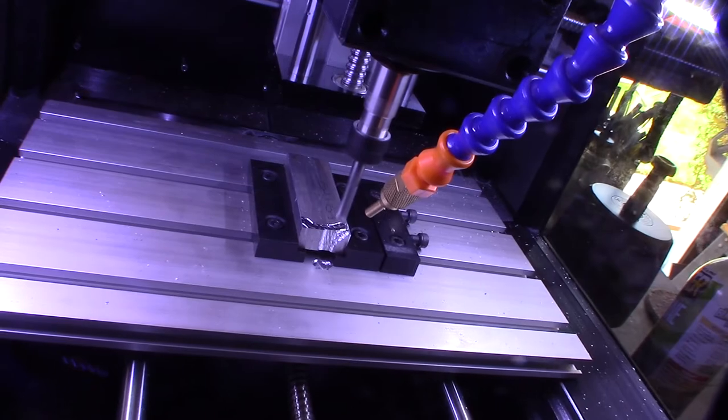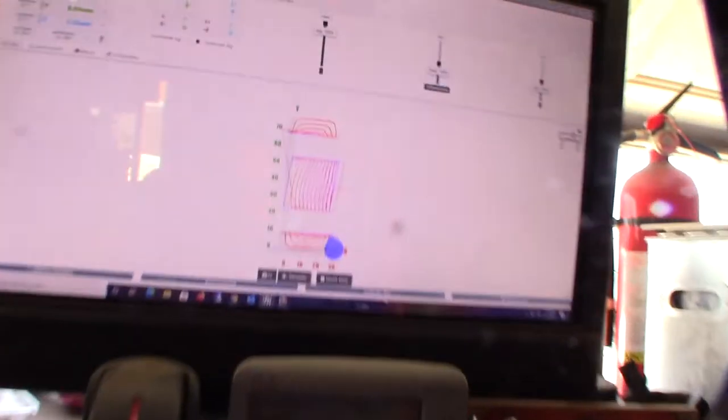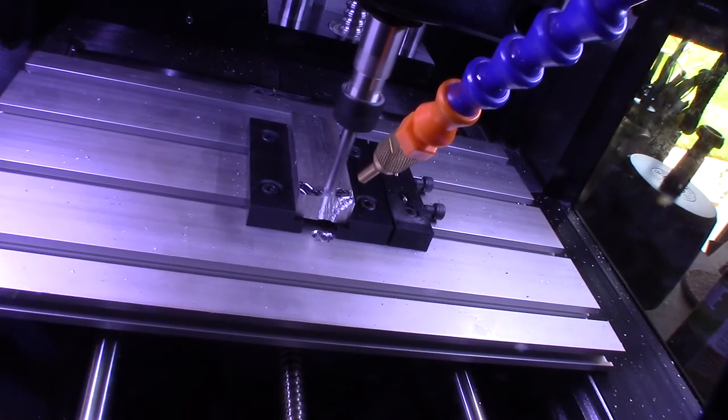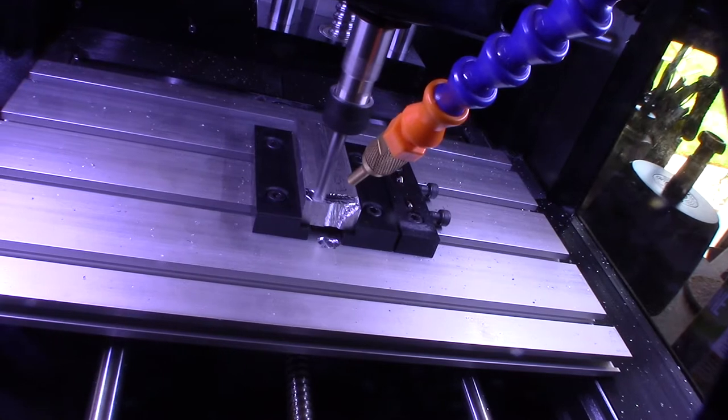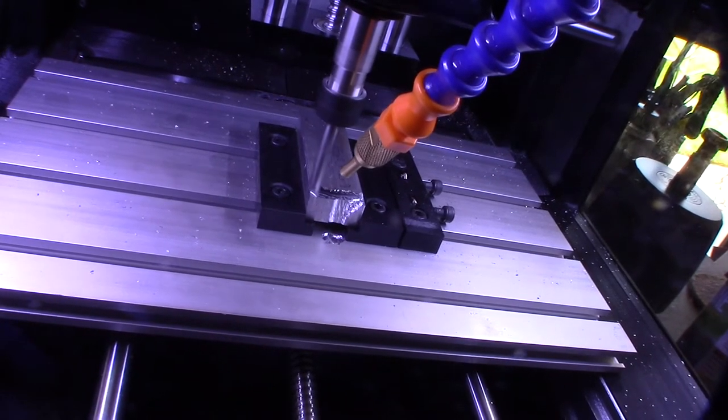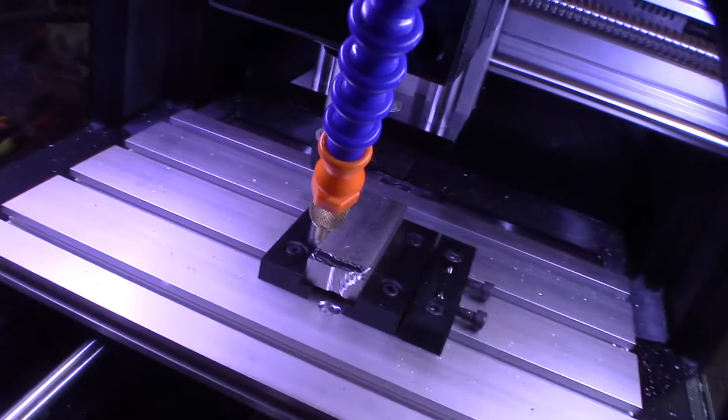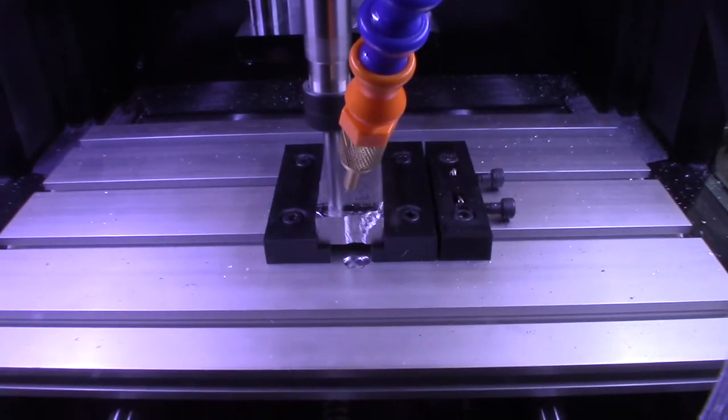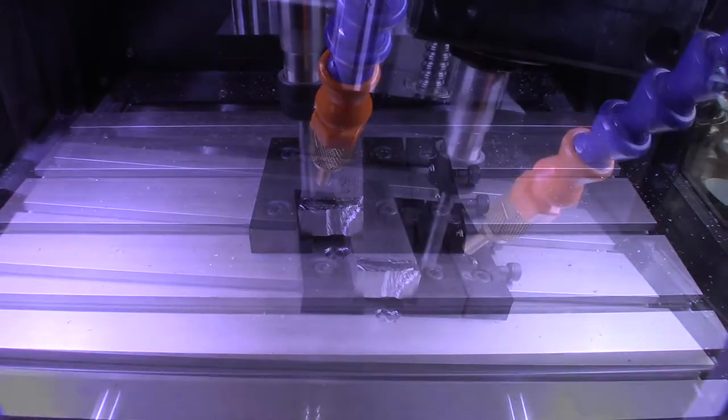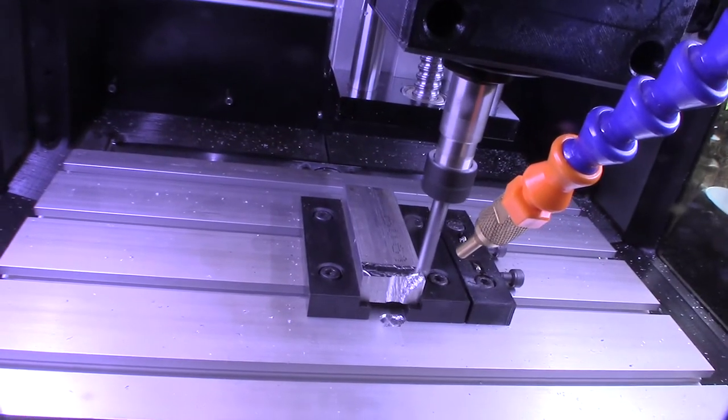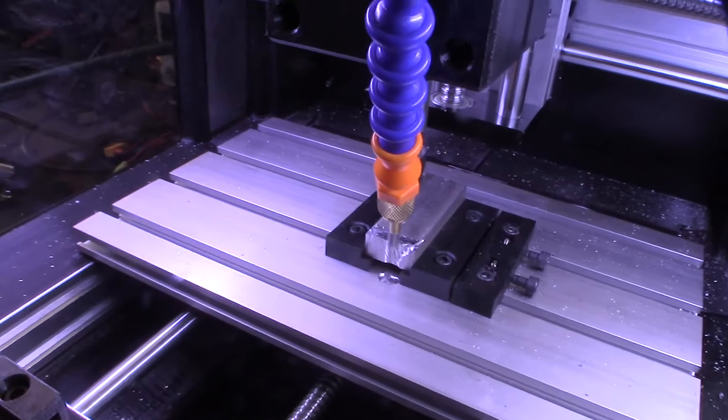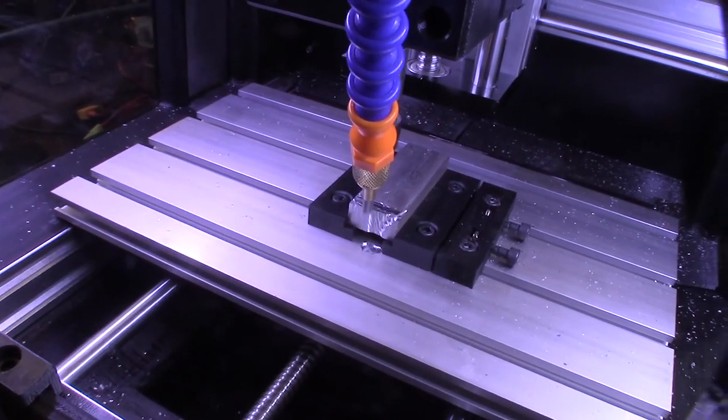So what I'm trying to do is make the vise. I think my dimensions are off, or the G-code's off. Well, the chip container isn't doing what it's supposed to do.